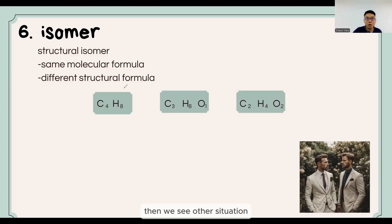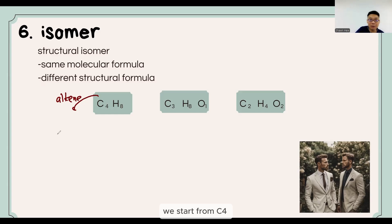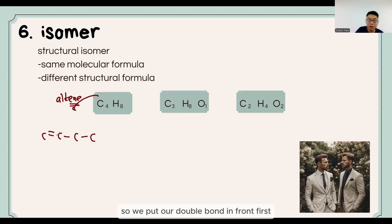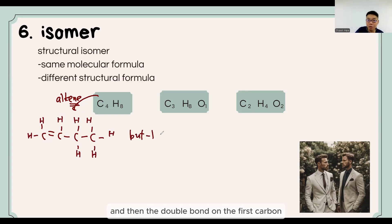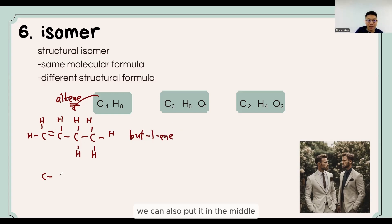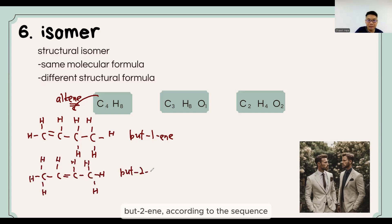Then we see another situation — for example C4H8. This is an alkene, so again we start from C4. Since it is an alkene, we have a double bond. We put the double bond at the front first and then fill in the hydrogens. This is called but-1-ene because the double bond is on the first carbon. For the double bond, other than putting it at the side, we can also put it in the middle — that gives but-2-ene, where the double bond is on the second carbon.